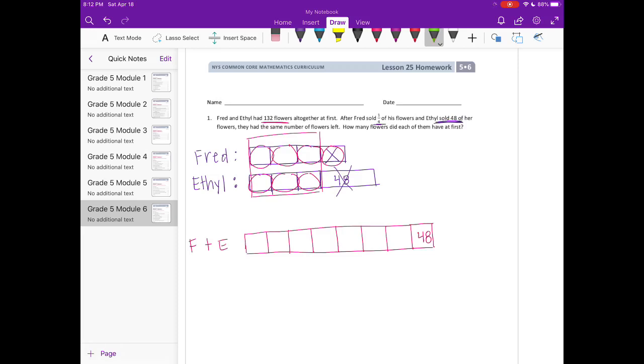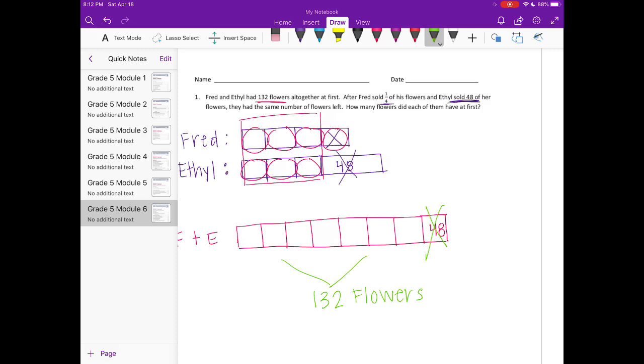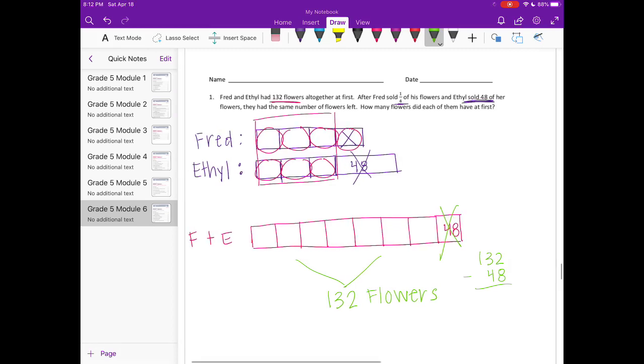Together we know that all of this is equal to 132 flowers. I'm going to start by getting rid of this 48, so I'm going to take 132 and subtract those 48 that I know that Ethel sold.